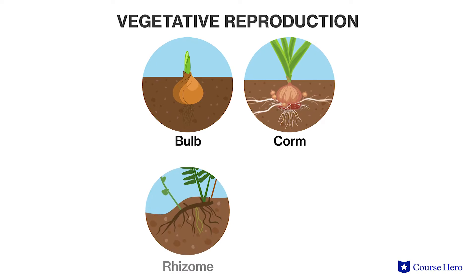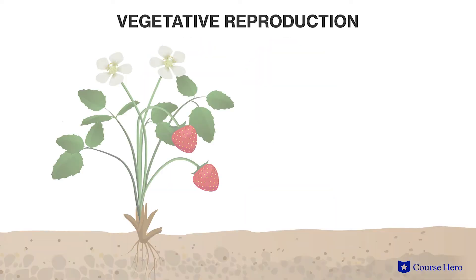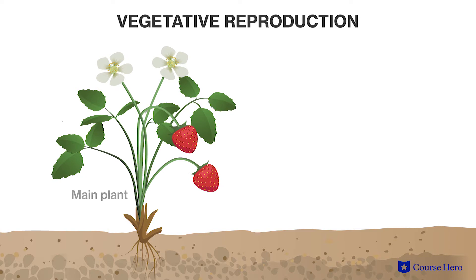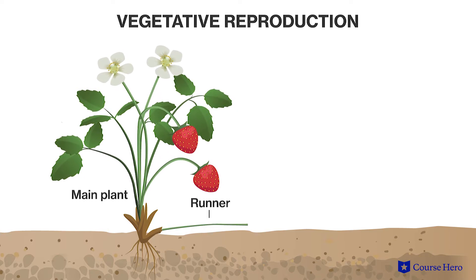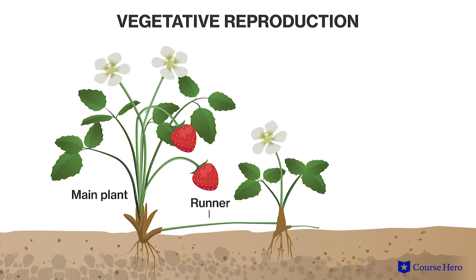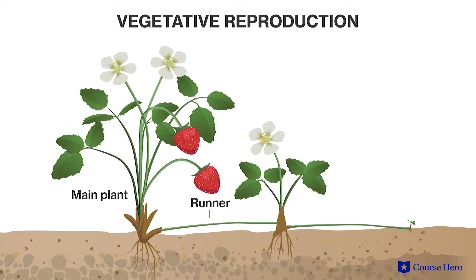The principal types of vegetative reproduction structures are bulbs, corms, rhizomes, and runners. For example, the strawberry plant is a plant that reproduces asexually by producing runners — long stems that grow sideways from the plant with occasional nodes that each grow a new plant.